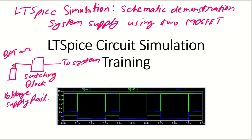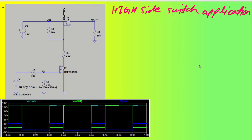Let's say you have a battery and this battery voltage has to be shifted to the system supply. In that case, there will be a switching circuit designed in the middle so that it can switch the battery supply on or off based on microcontroller functionality. As you power on the button, the battery supply or voltage supply rail will get connected to the system.